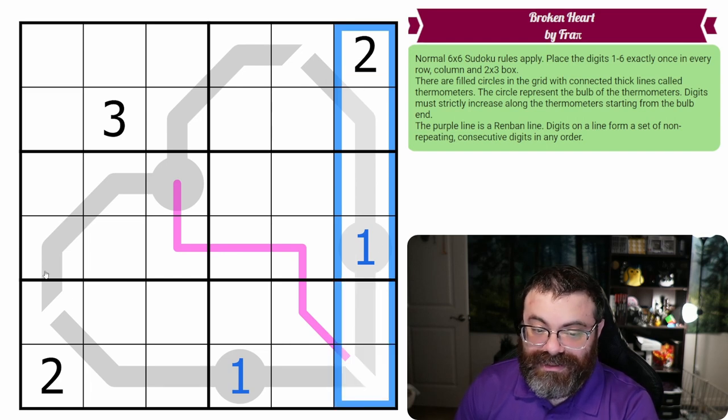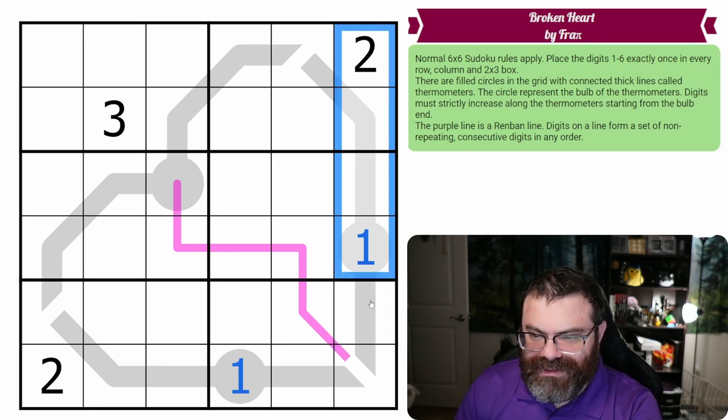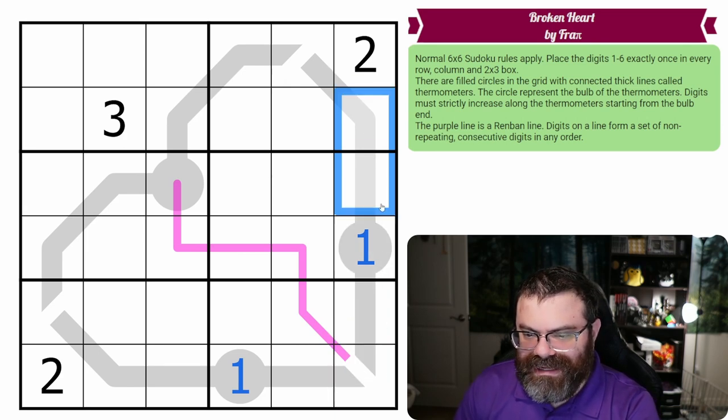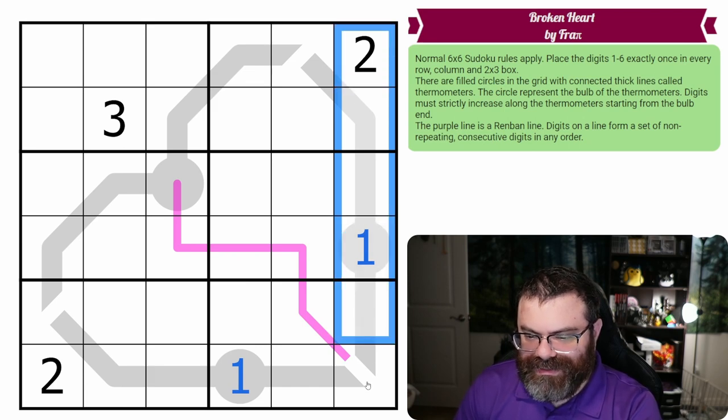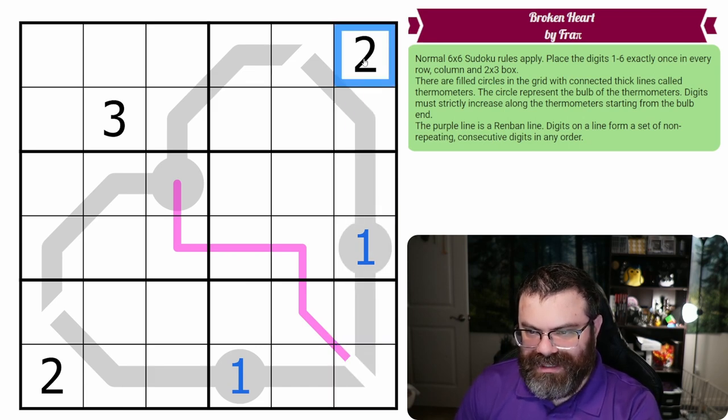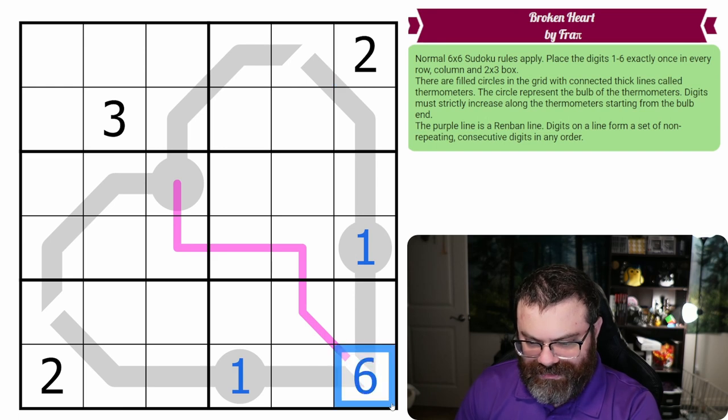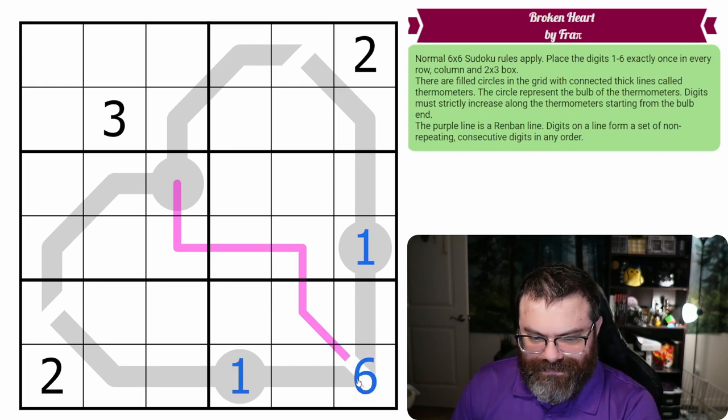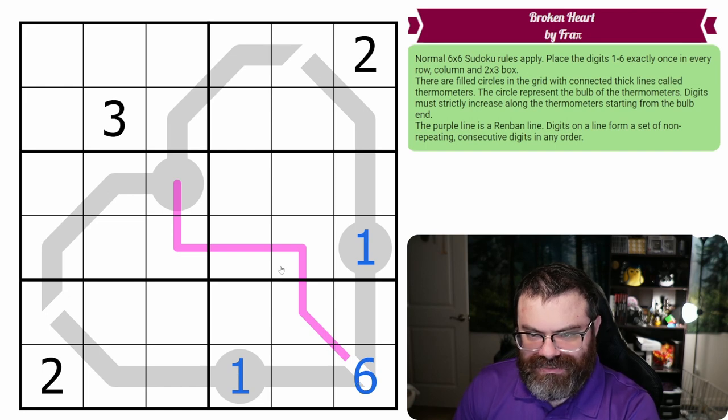This column also needs a six. Looking for ones and sixes is always a good idea in thermo Sudokus. The column needs a six, and it can't go anywhere but the end of a thermo. None of these are thermo ends. Obviously it could have gone here, but there's a two occupying that spot, so the six goes there.